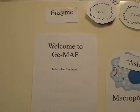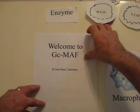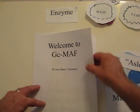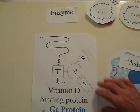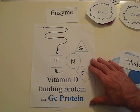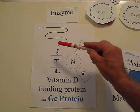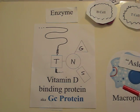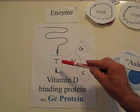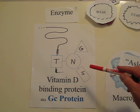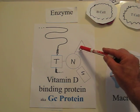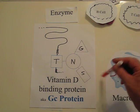Welcome to GCMoth. This is the vitamin D binding protein, also known as GC protein. It's a large molecule. We're going to focus on one amino acid. Attached to this amino acid are three sugars, designated G, N, and S.